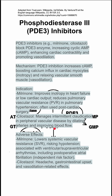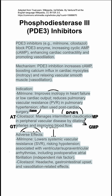There are some adverse effects to both. Milrinone can lower systemic vascular resistance and cause hypotension. It is associated with ventricular and supraventricular arrhythmias, including post-op atrial fibrillation, which is an independent risk factor. Silostazole can cause headache, GI upset, and vasodilation-related effects.